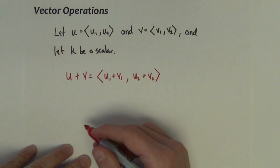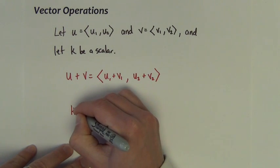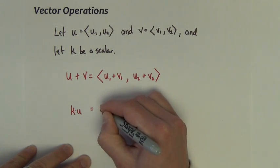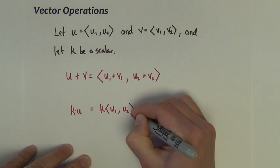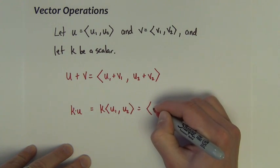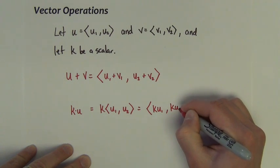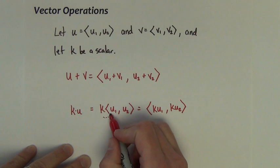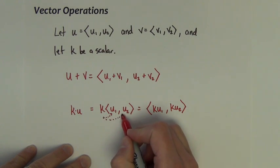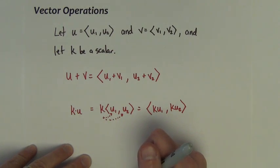We can also find the scalar product of a vector. K times U equals K times (U1, U2), which equals (KU1, KU2). Very simply, the K, the scalar, is allowed to simply distribute inside the vector.